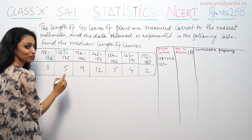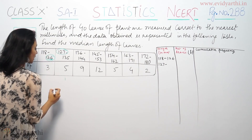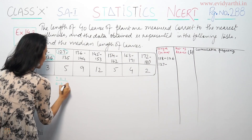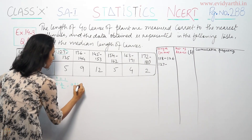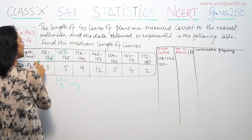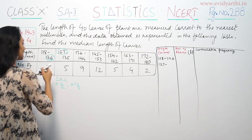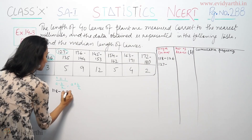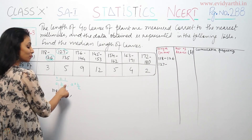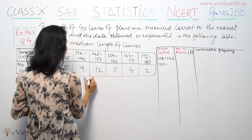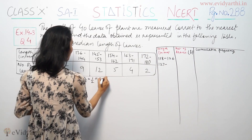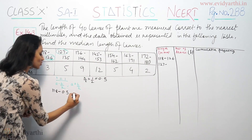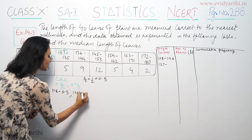The difference between class limits tells us how to adjust. The formula involves subtracting and adding 0.5 to make the data continuous. When the difference is 1, we do 1 divided by 2, which gives 0.5. So 0.5 will be subtracted from the lower limit and added to the upper limit.